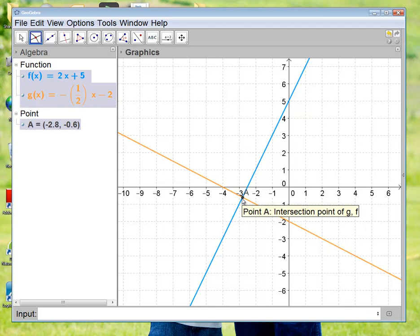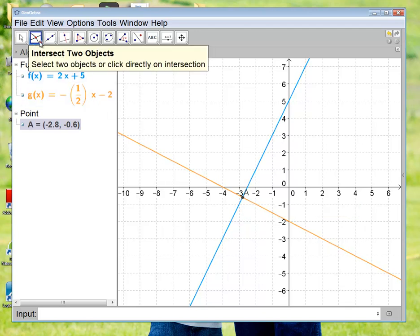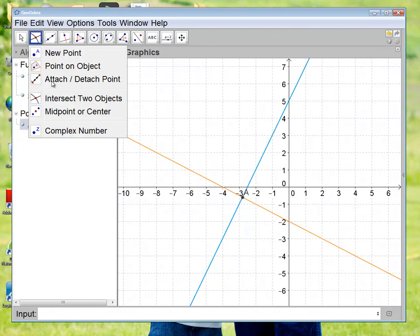Don't worry, we'll get to all that. But again, where did I find that? The second box over, bottom right corner, click intersect two objects. You click on the first item you want to intersect, you click on the second item you want to intersect.